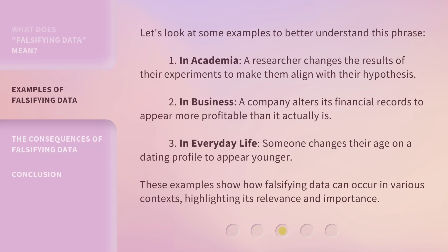Let's look at some examples to better understand this phrase. In academia, a researcher changes the results of their experiments to make them align with their hypothesis. In business, a company alters its financial records to appear more profitable than it actually is. In everyday life, someone changes their age on a dating profile to appear younger. These examples show how falsifying data can occur in various contexts, highlighting its relevance and importance.